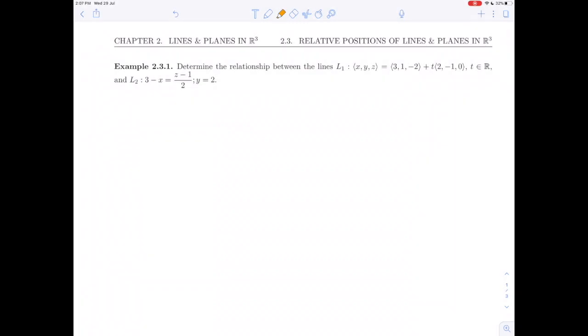Hello everybody and welcome back. We are going to do example 2.3.1 in this video about the relative position or the relationship between two lines. The two lines that we're given are L1, x, y, z is equal to 3, 1, minus 2 plus t times 2, minus 1, 0. And L2, which is given in symmetric form, 3 minus x is equal to z minus 1 over 2 and y is equal to 2.